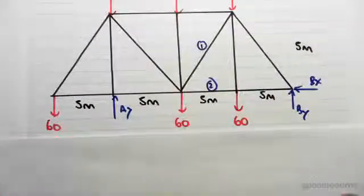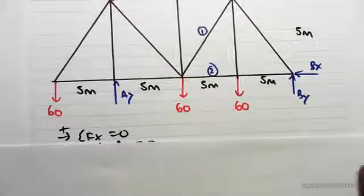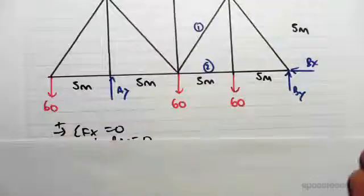In this we're doing the free body diagram first to find the reactions. The first thing we're going to do is find the sum of the forces in the x direction such that they equal zero.